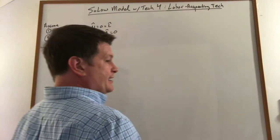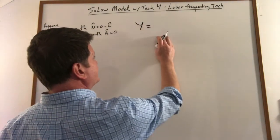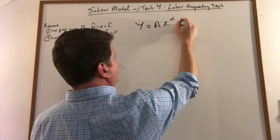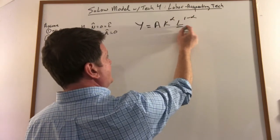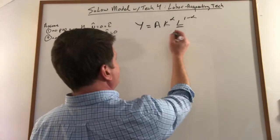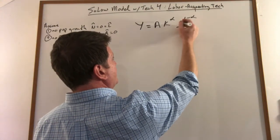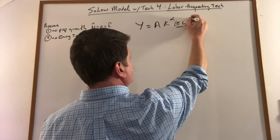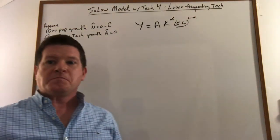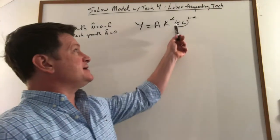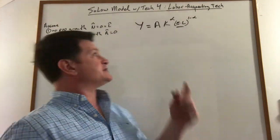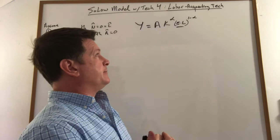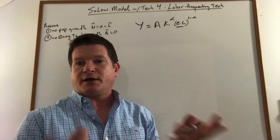The way we're going to capture that is we're going to take our normal production function, and here I'm writing it in original levels, not in per worker, and we're going to modify labor to be E times L, and the whole thing is raised to 1 minus alpha. E is something that multiplies each worker, so I had 10 people, now I still have 10 people but I get more out.